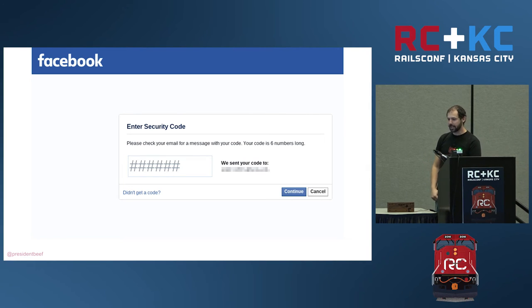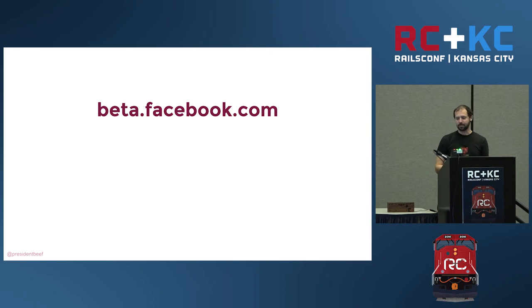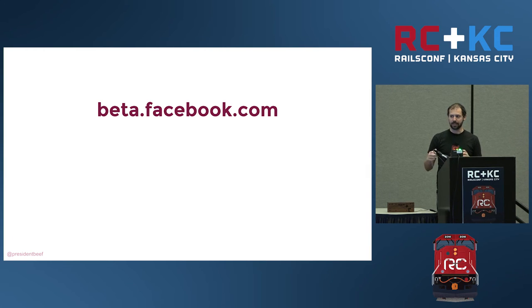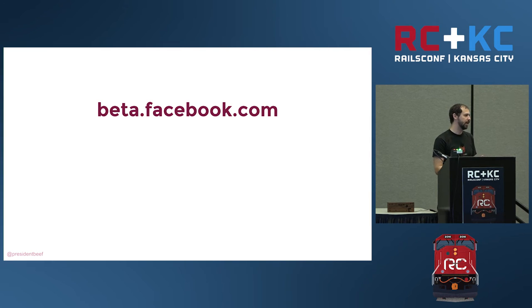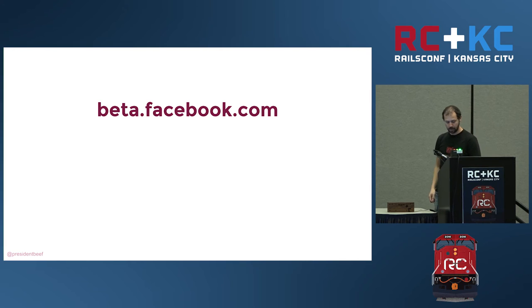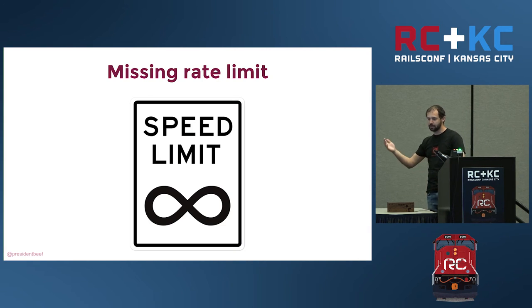But then he went over to another site he happened to know about — Facebook's beta site. It just turns out they did not have rate limiting on that site. So essentially, for any account where he knew the username, email, or phone number, he could get into their account — he'd just request the code and then sit there trying, at most a million times in the absolute worst case, which you could do relatively quickly compared to brute forcing a password.